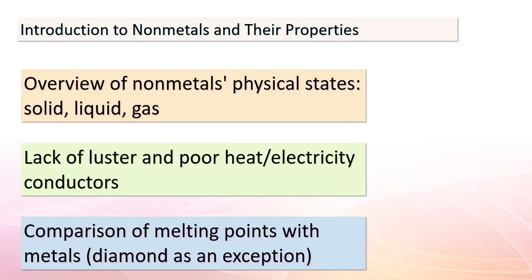We're embarking on a journey to explore non-metals. Unlike metals, non-metals can display various physical states including solids, liquids, and gases. One fascinating characteristic is that they lack the shiny appearance known as luster, and they typically aren't great conductors of heat and electricity. While most non-metals have lower melting points compared to metals, there's a captivating exception — diamond, a form of carbon, which melts at an incredibly high temperature of 3,570°C.